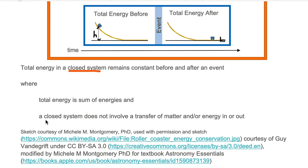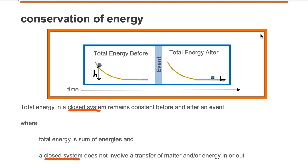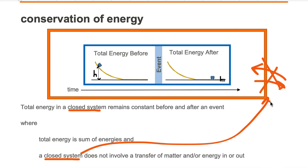A closed system does not involve a transfer of matter and or energy in or out. What I have here is a rectangular box. We are not going to allow any matter or energy in, and we are not going to allow any matter or energy out. Since we're not allowing it, the system is what we call closed.